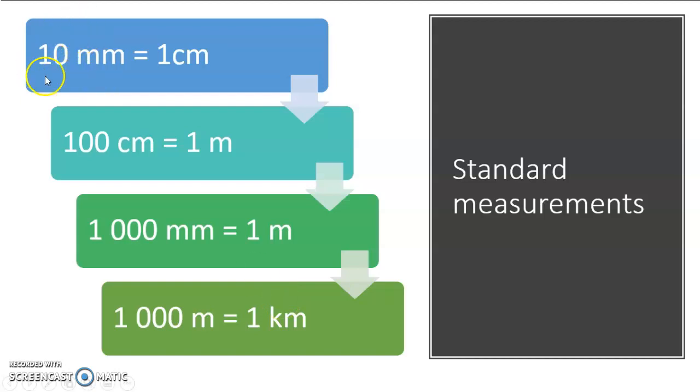So 10 millimeters is equal to one centimeter, 100 centimeters is equal to a meter, and since 10 times 100 gives me a thousand, a thousand millimeters will be equal to one meter. And similarly, 1,000 meters is equal to one kilometer.